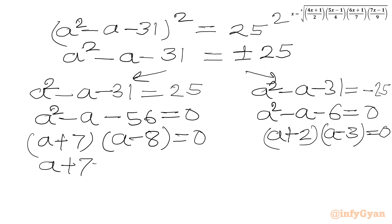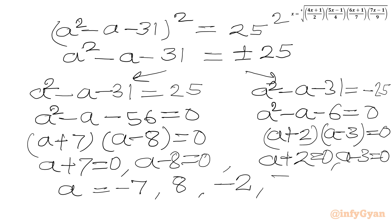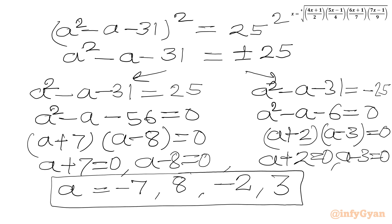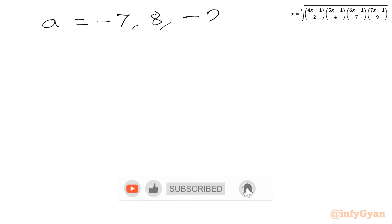From the first equation: a = -7 or a = 8. From the second equation: a = -2 or a = 3. So overall we have four solutions for a: a = -7, 8, -2, 3.